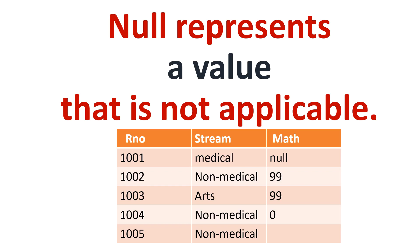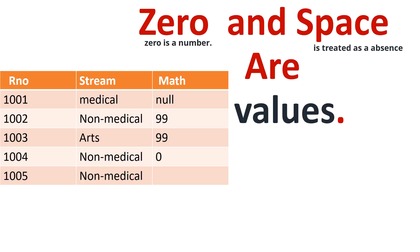Under mathematics in a DBMS, there may be null value, zero value, or a space value. But all values will have different meanings. Zero is a number and space is treated as an absence.